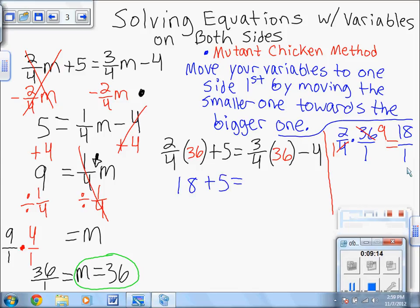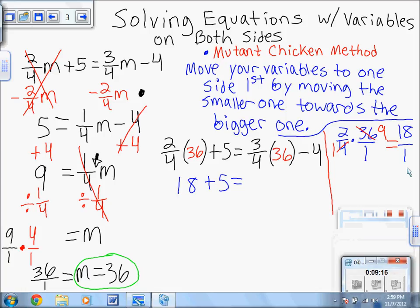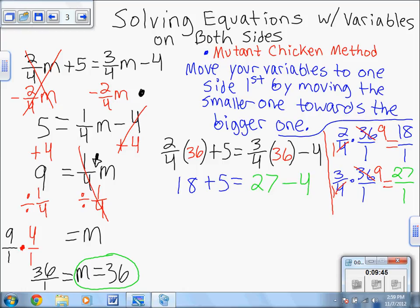Okay? So now, on the right side, we've got 3 fourths times 36. Same deal. We're going to show our work over here. So let's see. 3 fourths times 36 over 1. Go ahead and use our shortcut. We just found out that we know that 4 becomes a 1, 36 becomes a 9. So now we multiply. And if we do that, we get 3 times 9 is 27 over 1. So 27 over 1 is just 27. So that gives us 27 minus 4 on that side.